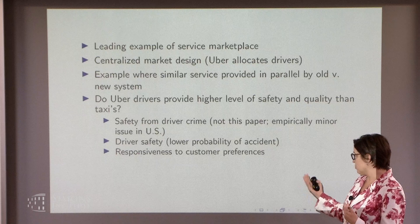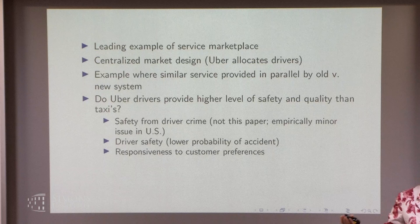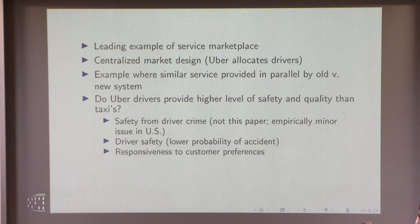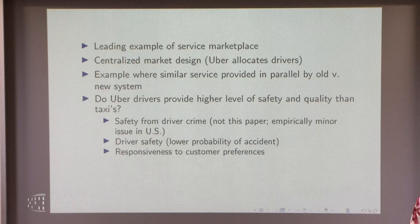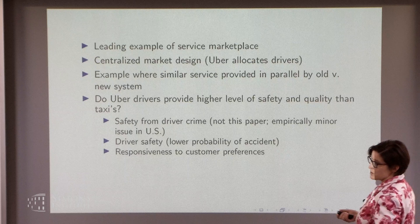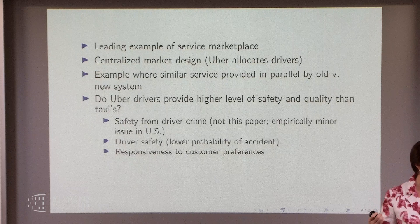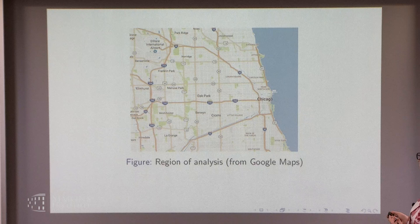What I'm going to measure is driver safety, which you could imagine calibrating in terms of probability of accidents. I didn't have data on accidents, but even looking at accident probability doesn't exactly capture what consumers want — if you didn't want to get in an accident, you'd never get in your car. People have preferences about speed; you don't actually want drivers to drive at the safety-optimal speed. People sometimes tell their driver they're late for a plane. So we're going to focus on responsiveness to customer preferences, but we'll also be able to say something about safety from what's known from other sources.